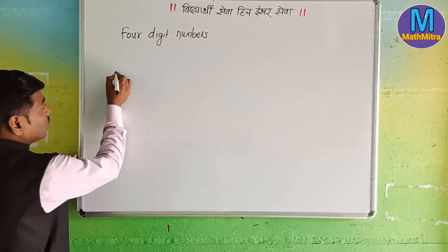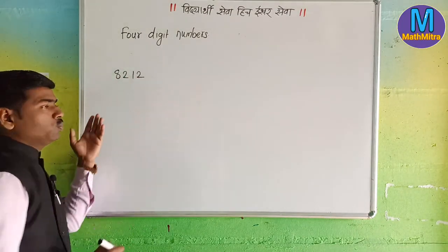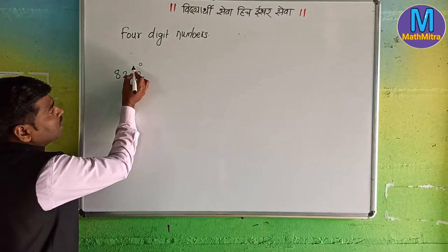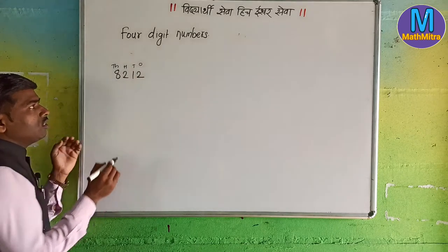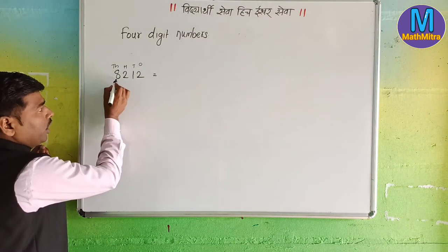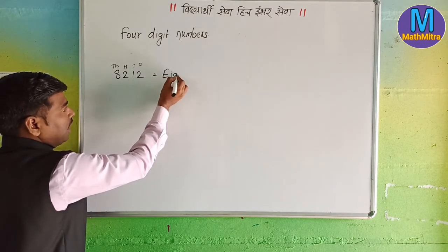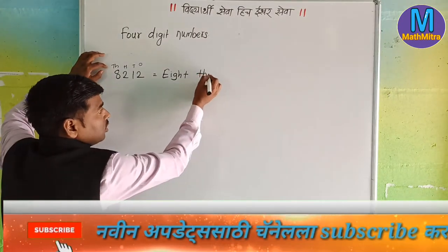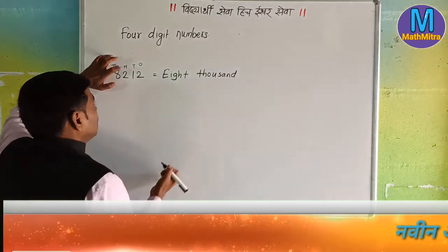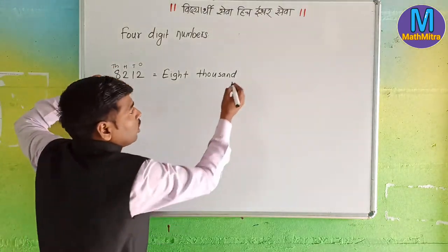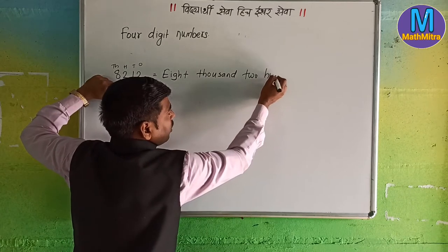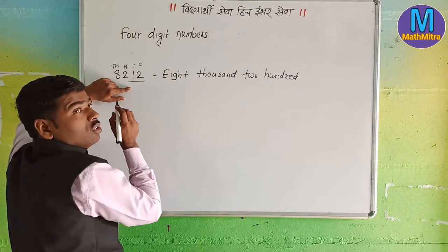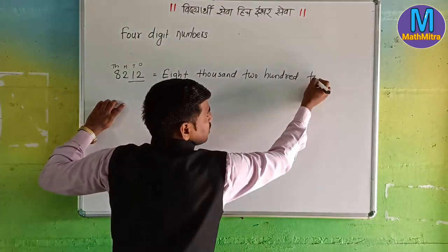Pahila number: 8,212. Ones, tens, hundreds, and thousands — monkey T! You: 8,000 — eight thousand. Spelling: E-I-G-H-T T-H-O-U-S-A-N-D. 200 — two hundred. And the next one: ed do ni milun — 1 to 12, means 12. So 8,212: eight thousand two hundred and twelve.